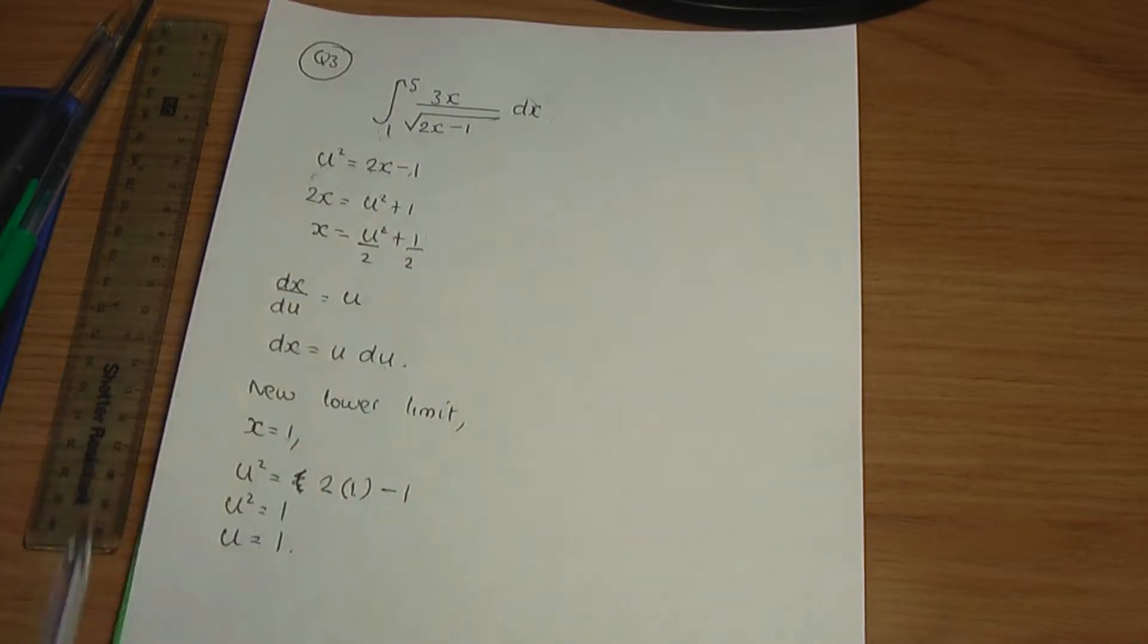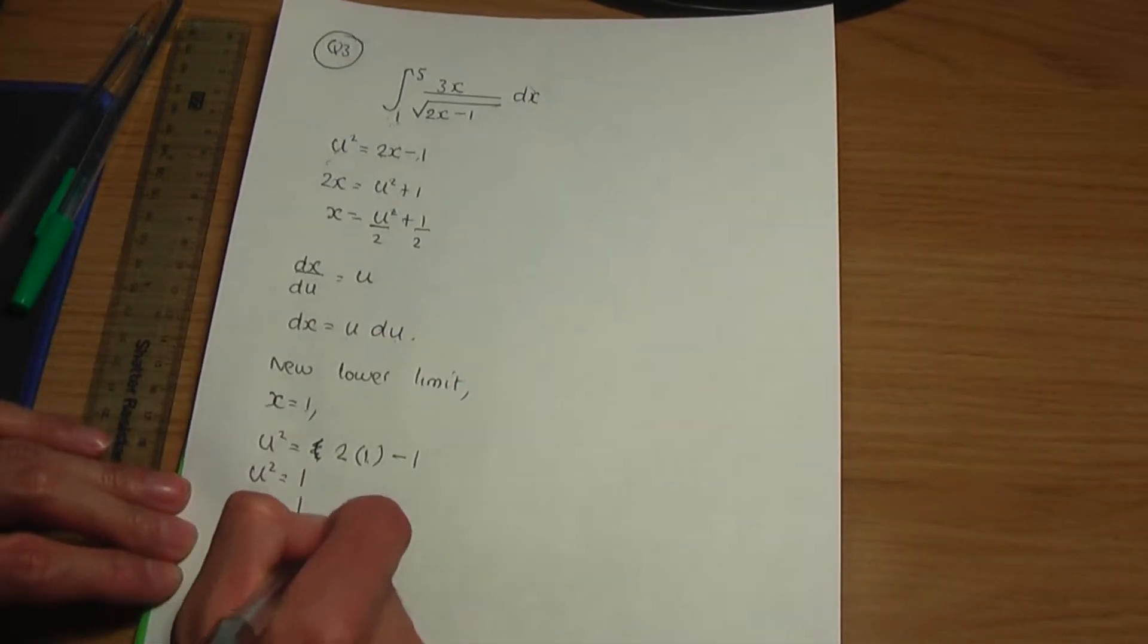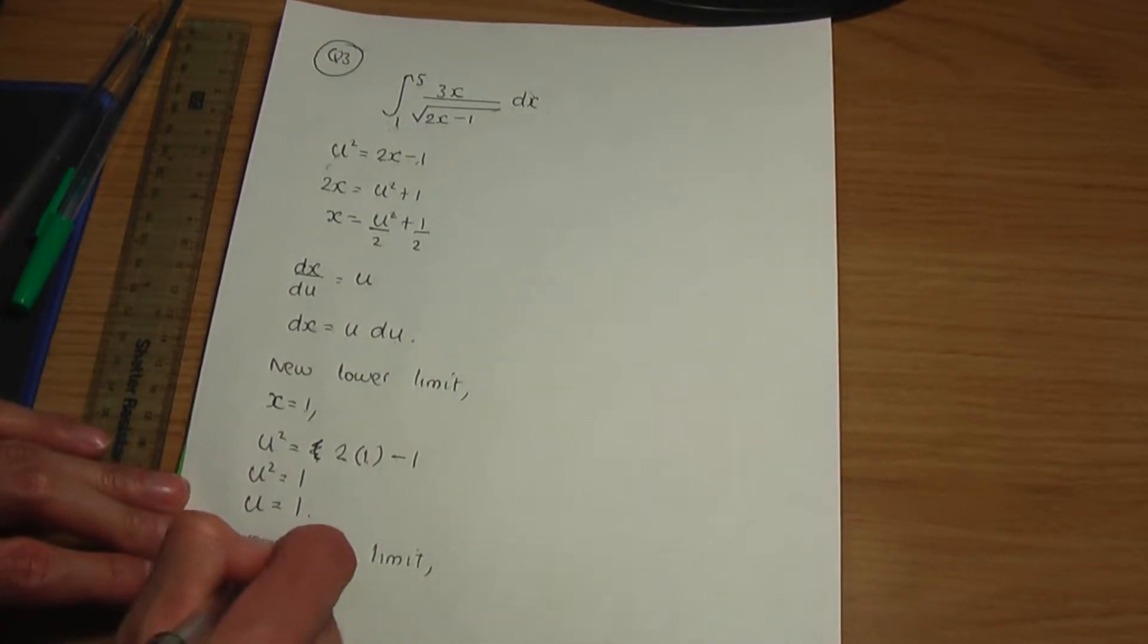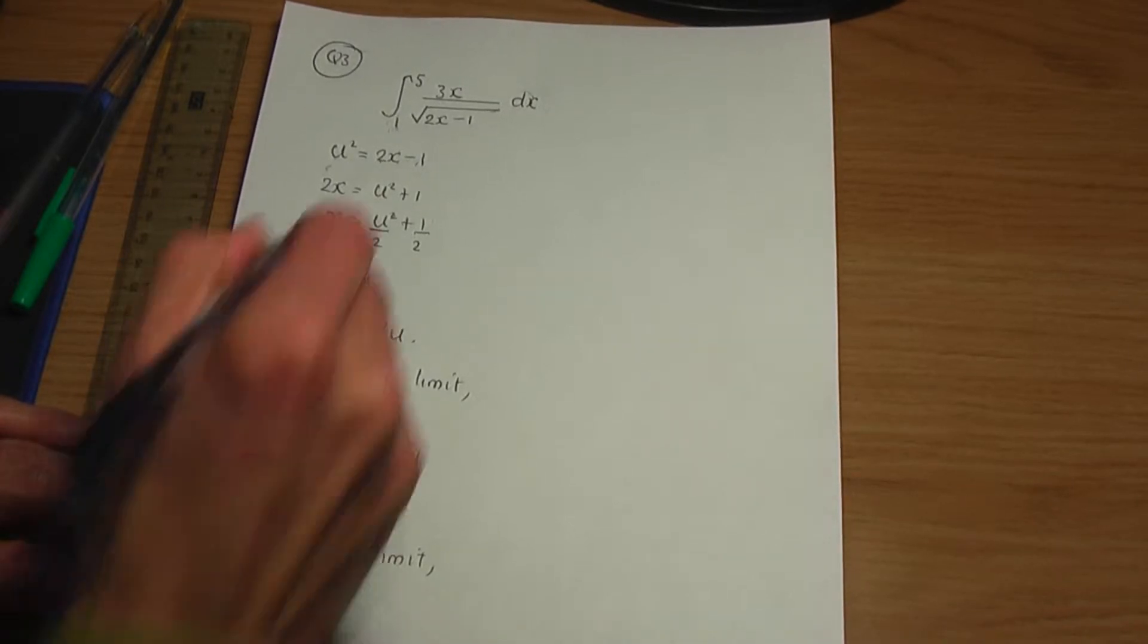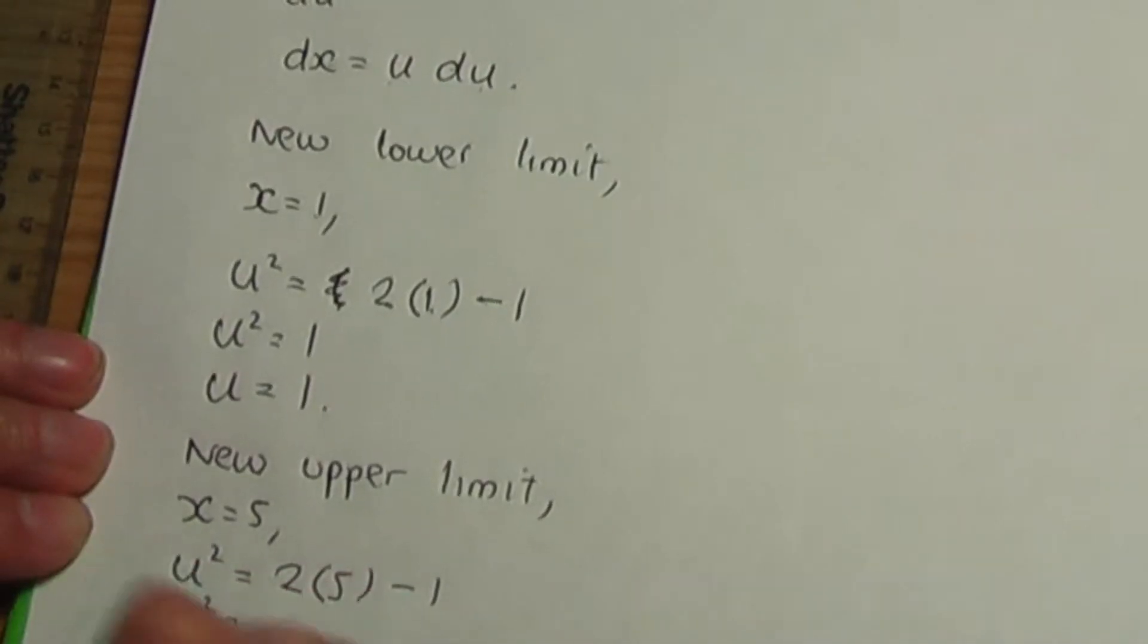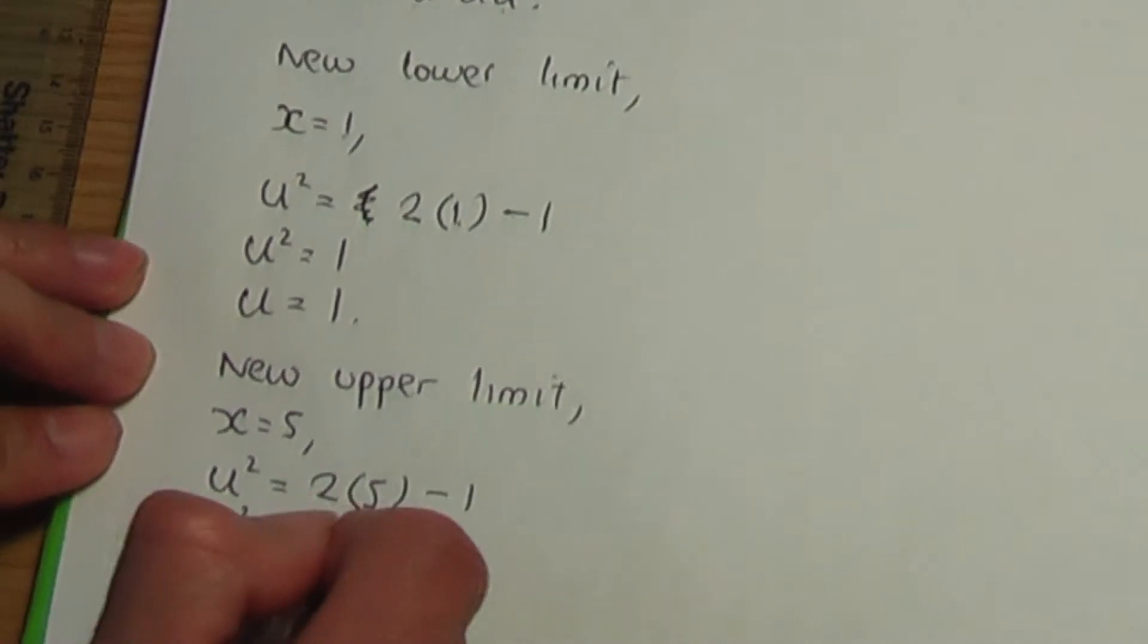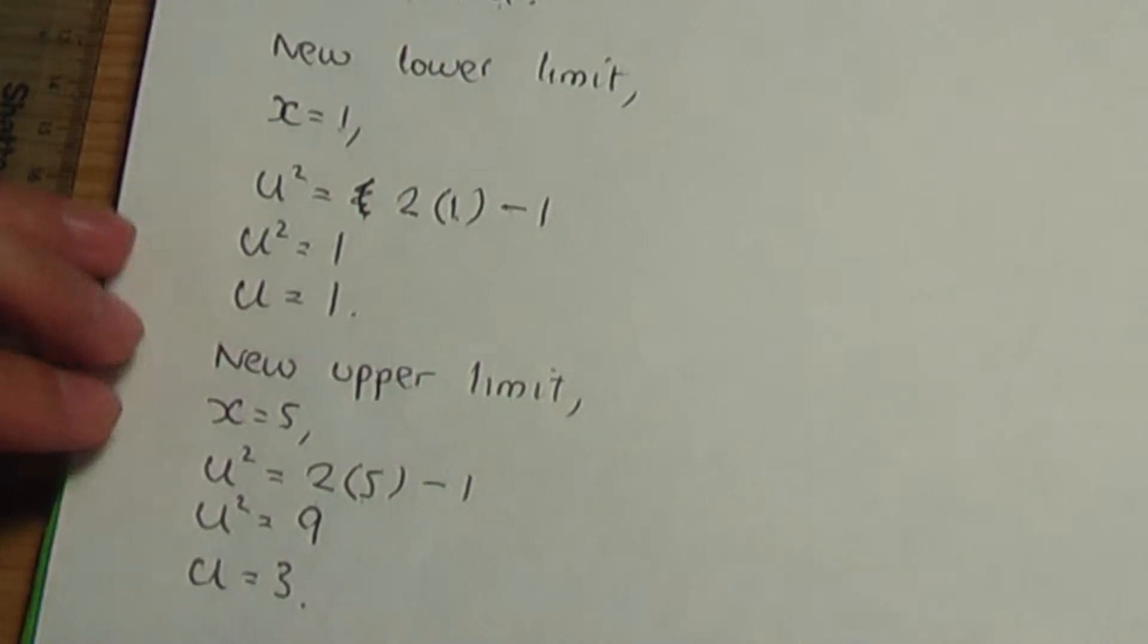Let's work out the new upper limit in the same way. The old upper limit is x equals 5. If I put that into the substitution, u squared will be 2 into x, replaced by 5, minus 1. 2 into 5 is 10. 10 minus 1 is 9. u, therefore, is the square root of 9, which is 3.